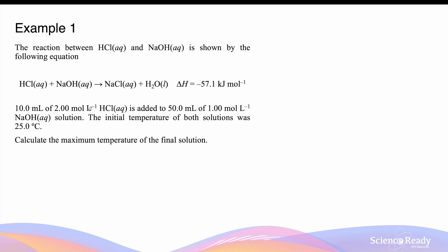We have 10 milliliters of 2 moles per liter hydrochloric acid being added to 50 milliliters of 1 mole per liter sodium hydroxide solution. The initial temperature of both solutions was 25.0 degrees Celsius. To find the maximum temperature of the final solution, we need to first find out how much energy was actually produced by the neutralization, and for that we need to find the number of moles of water produced.